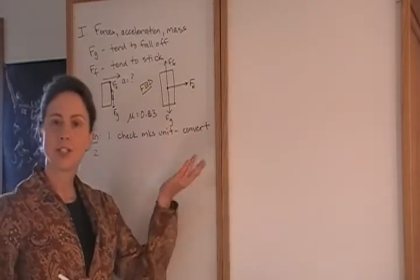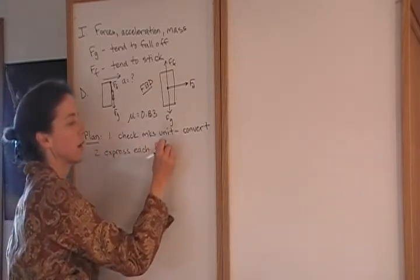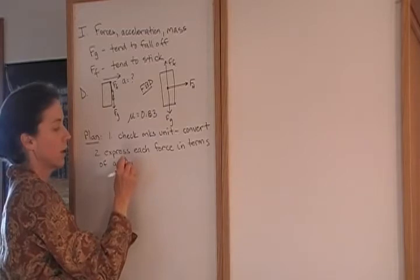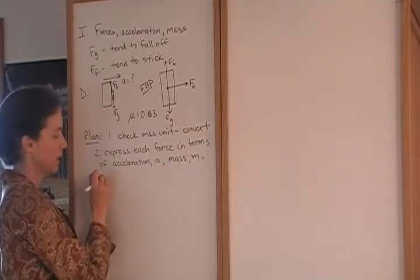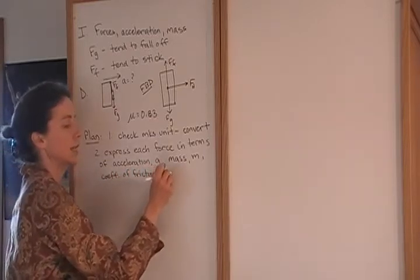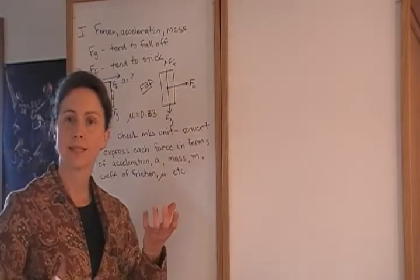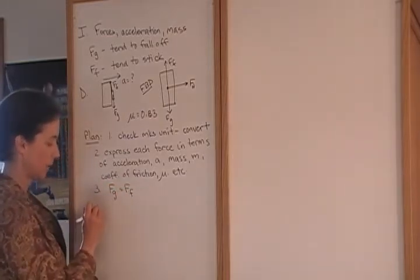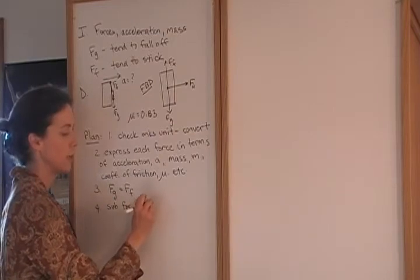Secondly, all we have right now are designations for different forces, so we would like to express each force in terms of acceleration, which we'll call A, mass, which we'll call M, the coefficient of friction, which we were given mu, etc. Thirdly, since the frictional force and the gravitational force are the primary forces balancing each other, we will set them equal to each other to determine the minimum conditions for the bat to stick. Then we will substitute for each of those forces the expressions that we developed in part two.